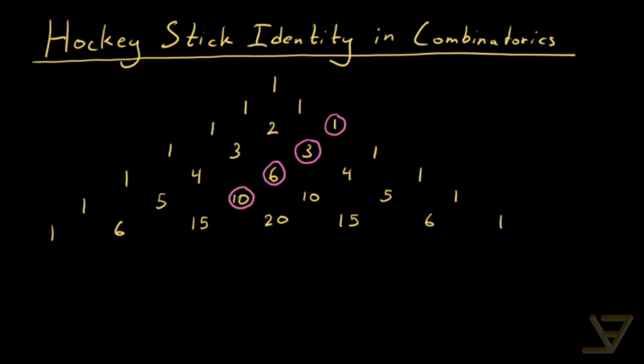And what we do is that we add up the entries. So we get one plus three plus six plus ten is equal to twenty.